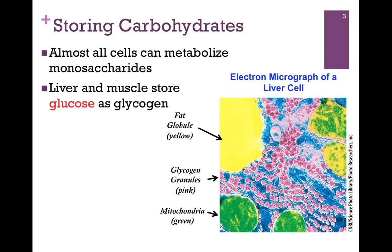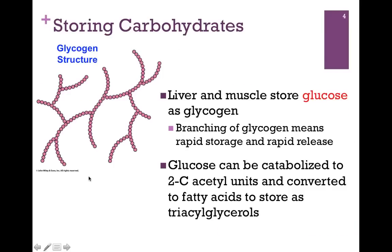Almost all cells can metabolize monosaccharides, but not all of them can store them. Muscles can store glucose as glycogen to a limited extent, but the primary storage facility is the liver. Here we have an electron micrograph of a liver cell. You can see a fat globule in yellow, mitochondria in green, and here are the glycogen granules in pink. Remember, glycogen has this branched structure, pictured on the upper left here, and that allows us to rapidly store or release it as we need.